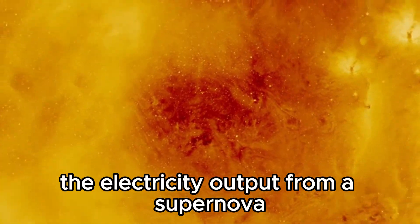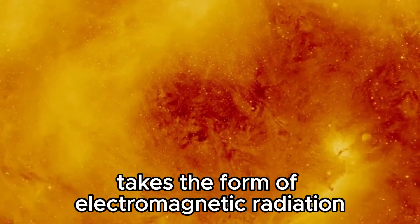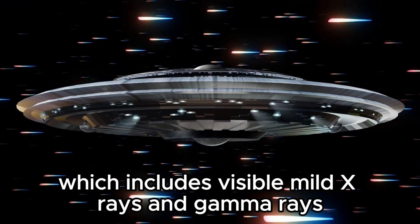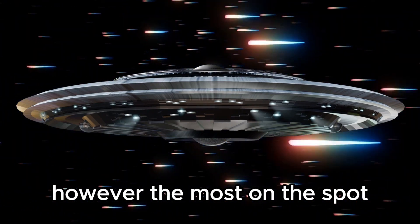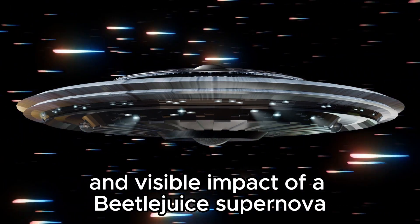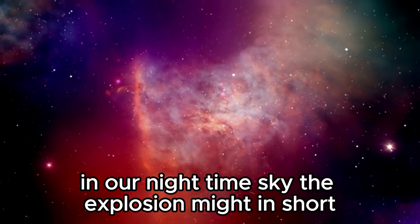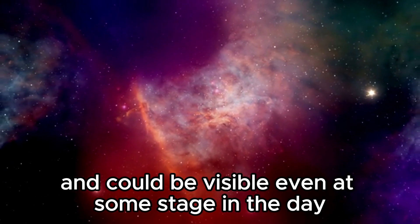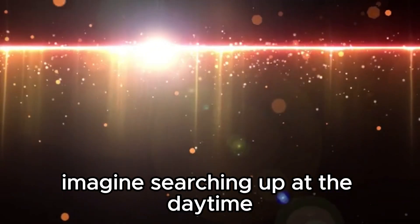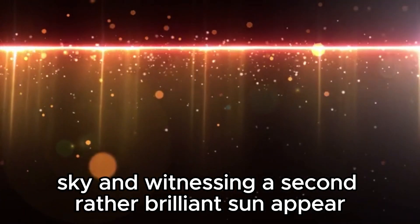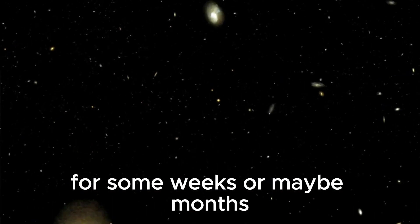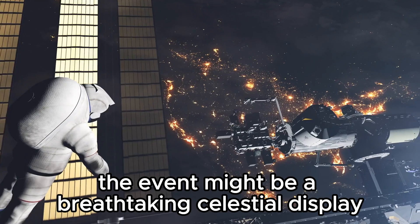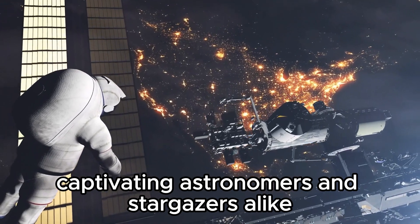The energy output from a supernova typically takes the form of electromagnetic radiation, including visible light, X-rays, and gamma rays. However, the most immediate and visible impact of a Betelgeuse supernova would be a stunning light show in our night sky. The explosion might briefly outshine the moon and would be visible even during the day. Imagine looking up at the daytime sky and witnessing a second, very bright sun appear for a few weeks or even months. The event would be a breathtaking celestial display, captivating astronomers and stargazers alike.